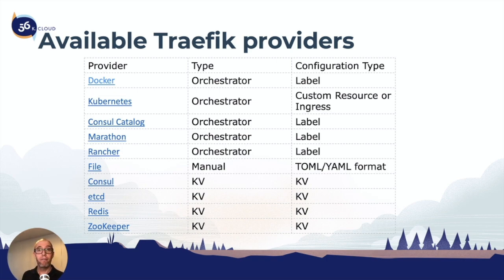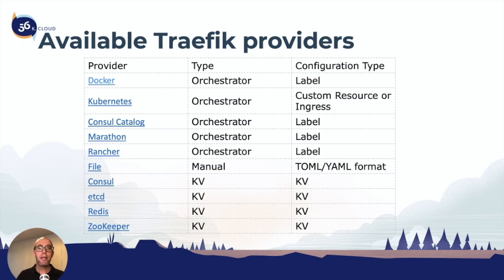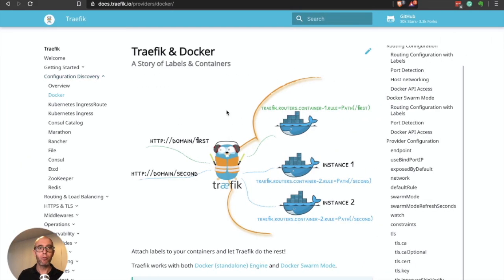The final column shows the configuration type — how we configure these particular providers for Traefik. In the Docker example, we configure Traefik using labels. We pass labels to Traefik, for example telling Traefik to refresh the provider connection every two seconds, or passing different variables for the API calls that go back and forth between Docker and Traefik. Let's take a closer look at what's available in the provider right in the documentation.